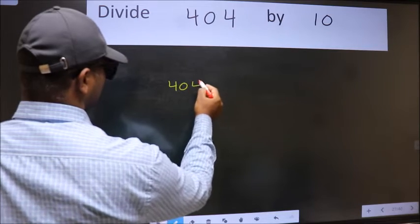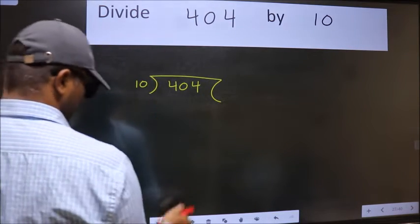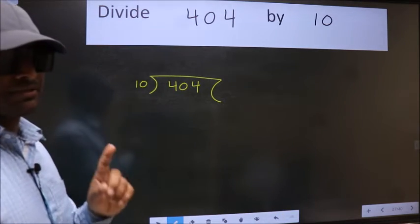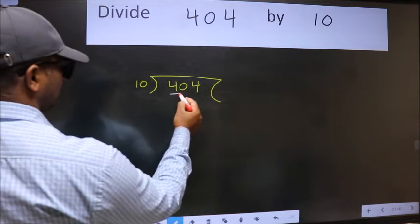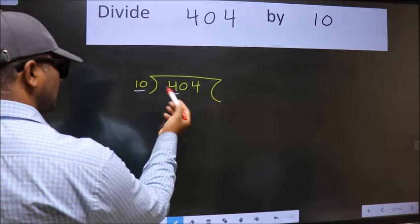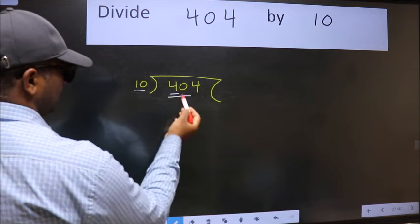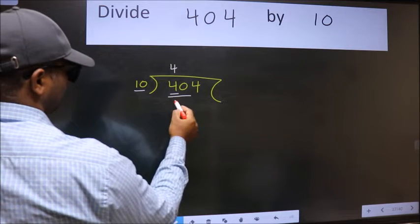404 here, 10 here. This is your step 1. Next, here we have 4 and here 10. 4 is smaller than 10. So take 2 numbers, 40. When do we get 40 in 10 table? 10 times 4 is 40.